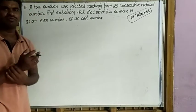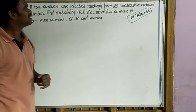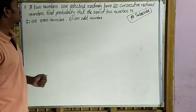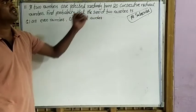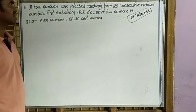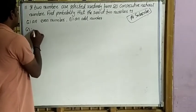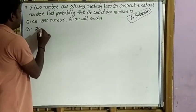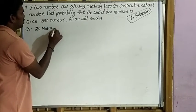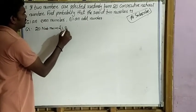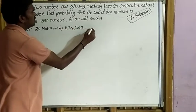Next, 11th question: If two numbers are selected randomly from 20 consecutive natural numbers, given: 20 natural numbers that are 1, 2, 3, 4, 5, 6, 7, ... up to 20.